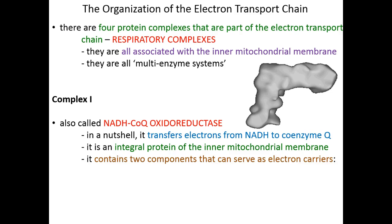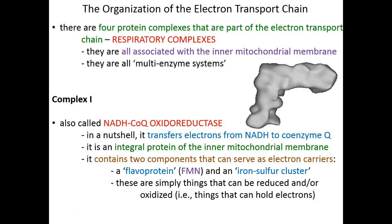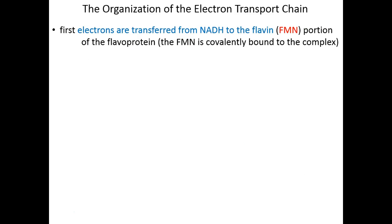Complex I contains two components that can serve as electron carriers: FMN, which is a flavoprotein — one of the electron carriers made from the coenzyme riboflavin — and iron-sulfur clusters. Both FMN and iron-sulfur clusters are things that can be reduced and oxidized. They're electron carriers; they can gain or lose electrons. That's all that they are.